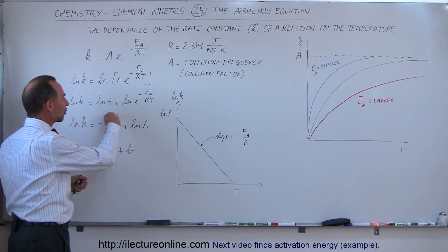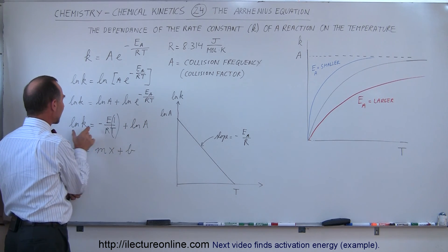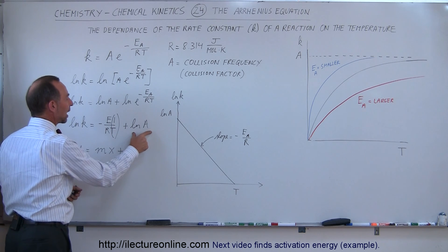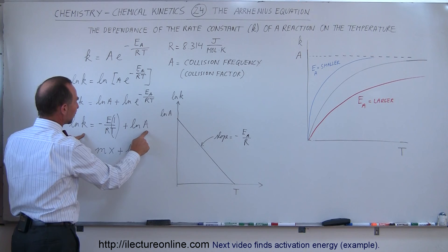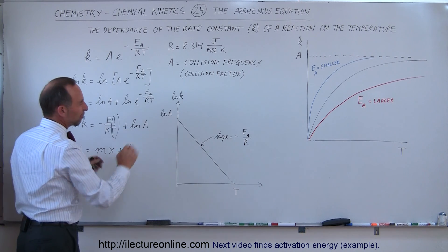So that means as the temperature goes up, this becomes a smaller and smaller factor, and you can see then that the natural log of k approaches the natural log of A again, where it shows that the rate constant approaches the collision frequency. So this is just a different way of writing it.